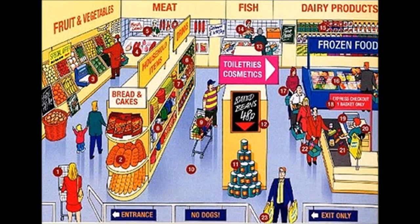Some other shops are: an optician, where you buy glasses to help you see; a toy shop to buy toys; a charity shop to buy second-hand items; and a jeweller to buy jewellery.